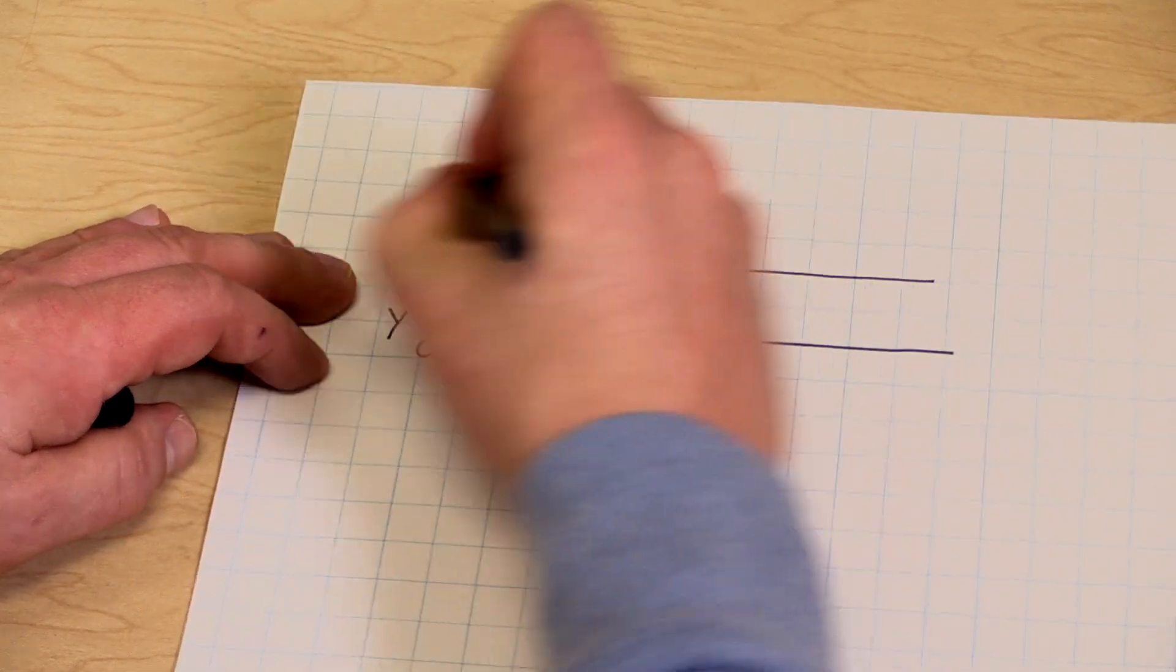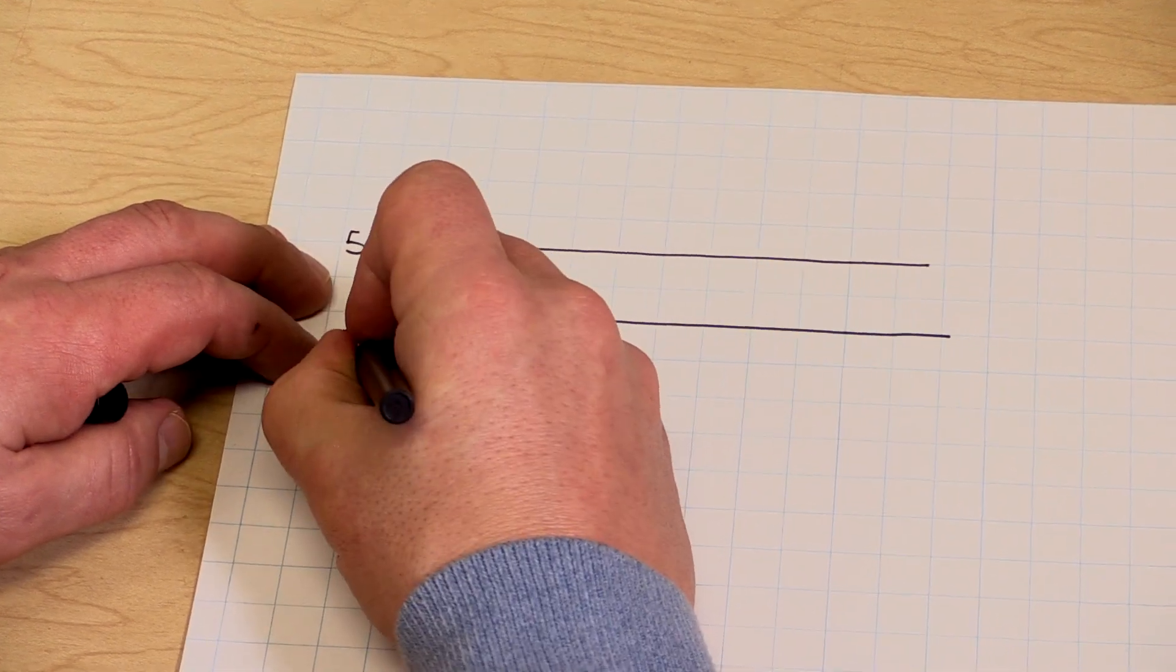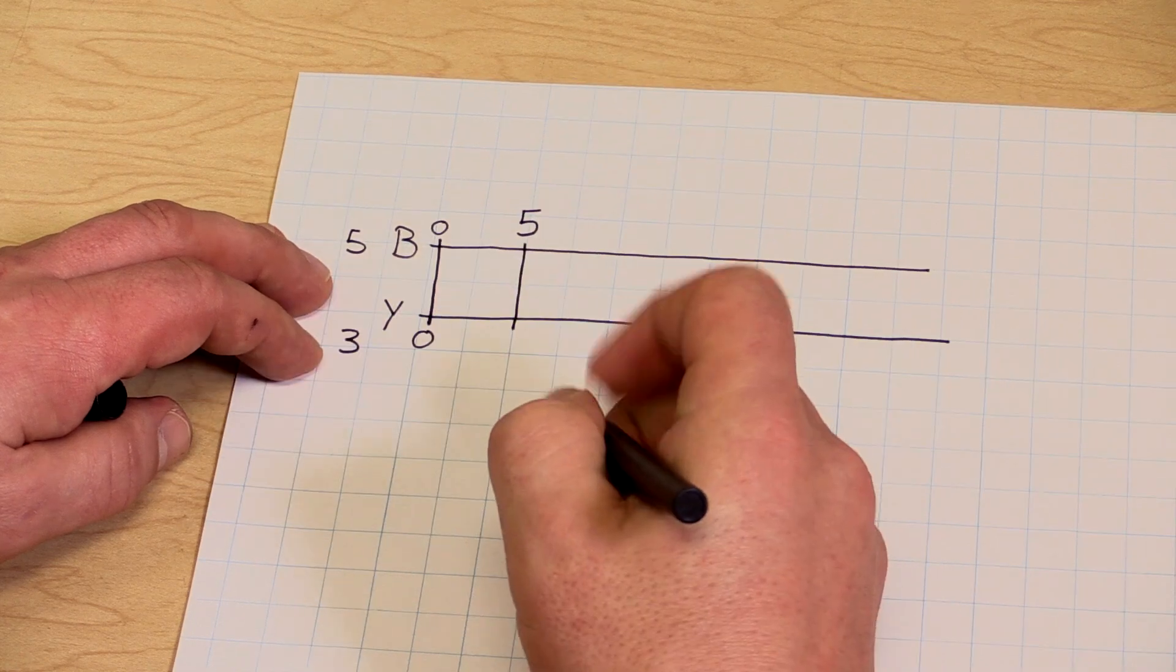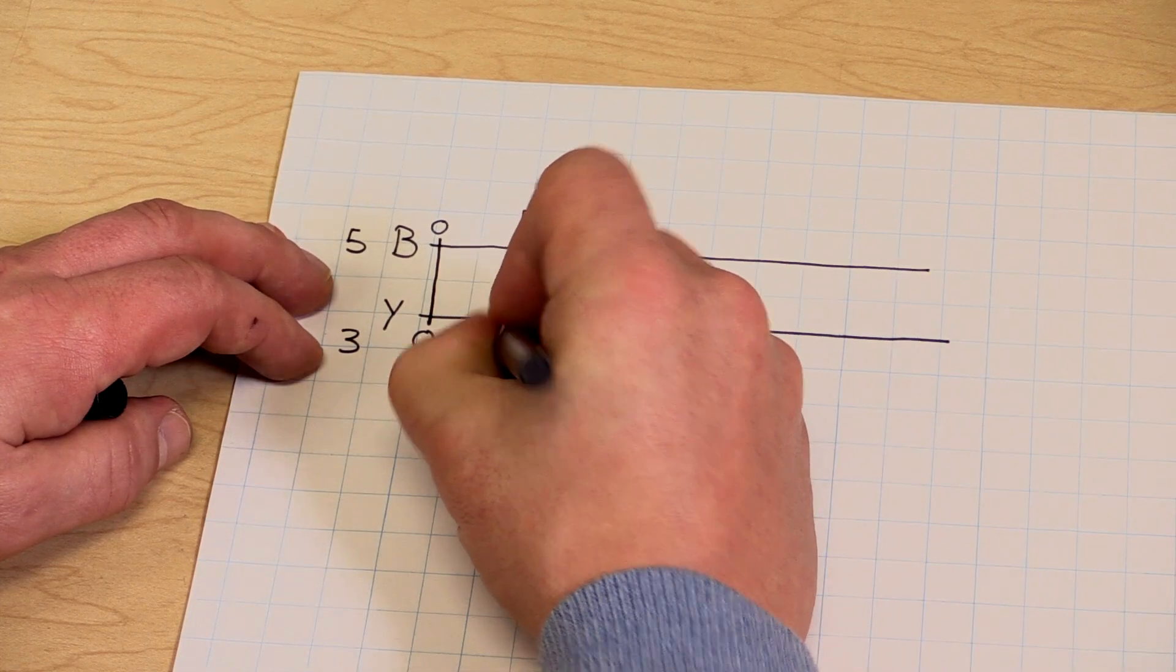Since it's a 5 to 3 ratio, if the teacher uses 5 cups of blue, she'll use 3 cups of yellow.